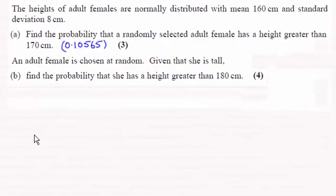Hi, now for part B here we're told that an adult female is now chosen at random and given that she is tall, find the probability that she has a height greater than 180 centimeters.